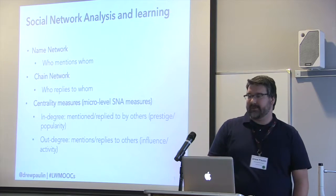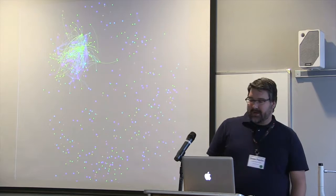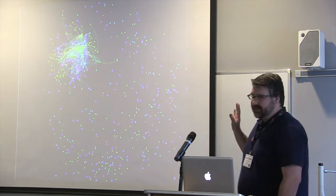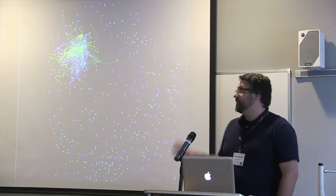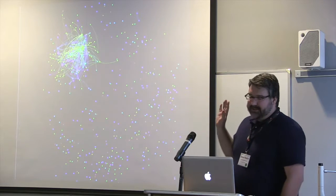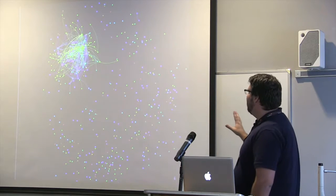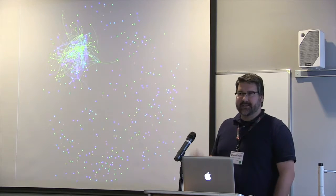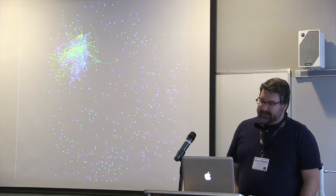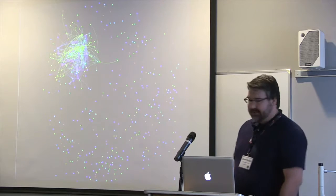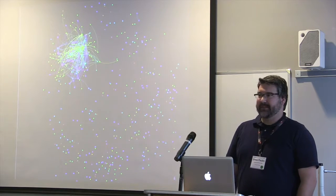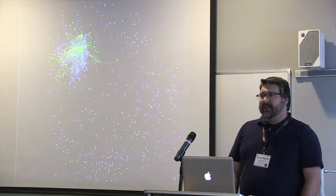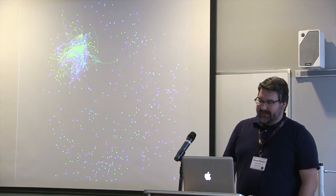Looking at the name and chain networks for the water MOOC, the name network uses a layout algorithm called Fruchterman-Reingold, which shows all nodes. You can see there are a lot of island nodes — single points that aren't really connected. This is pretty common in MOOC networks and gives us a sense of attrition, retention, and how forum participation beyond single posts is quite limited.